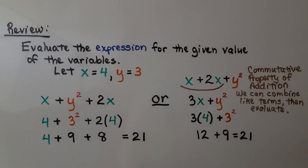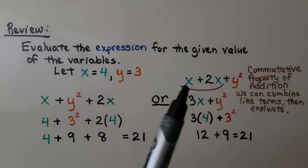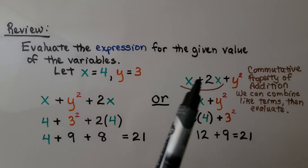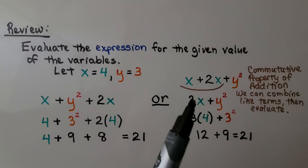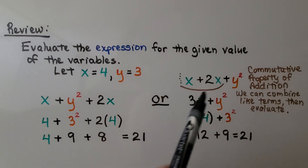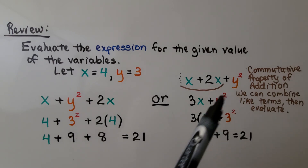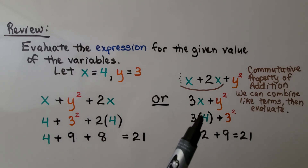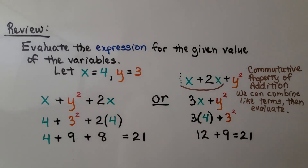We can also use the commutative property of addition to rearrange terms and combine like terms: x plus 2x equals 3x — remember, there's an invisible 1 in front of the x. So we get 3x plus y raised to the second power, which means 3 times 4 plus 3 squared, giving 12 plus 9, which equals 21. Either way, we get 21 as our answer.